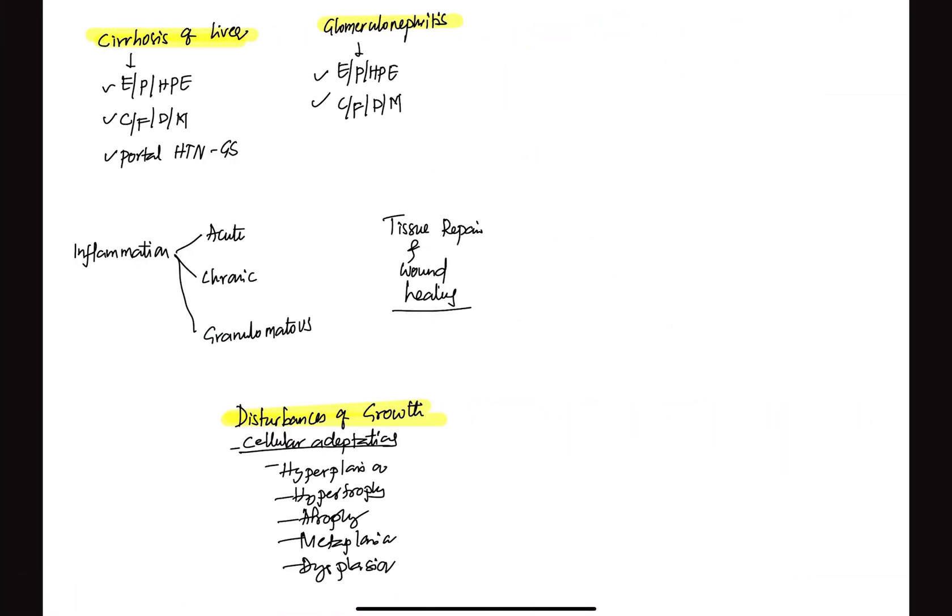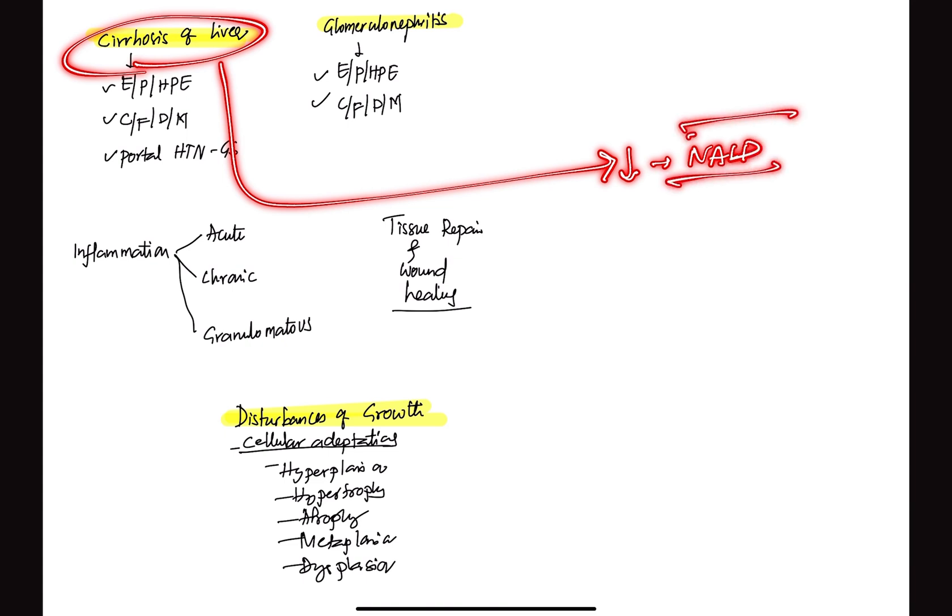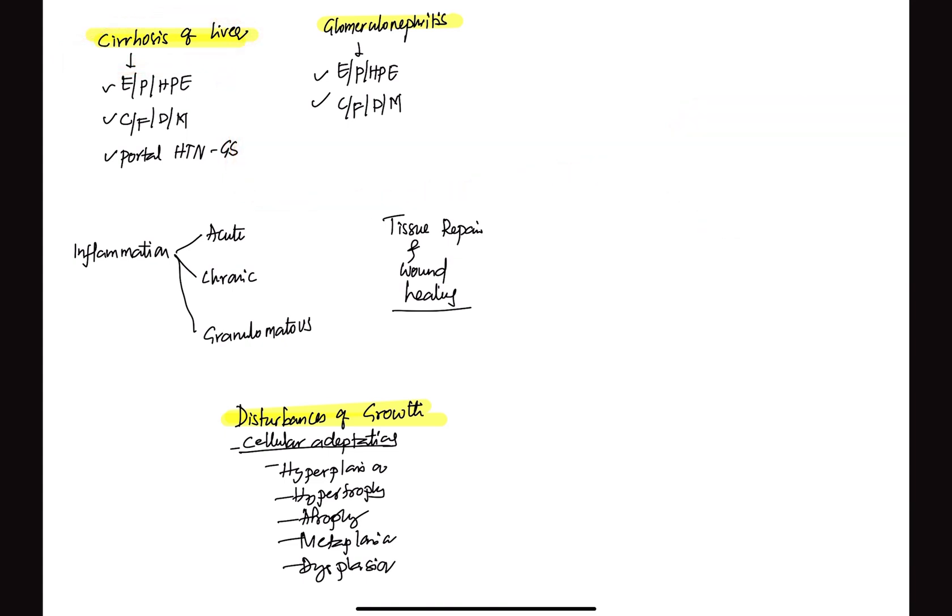Let's also conclude this discussion by looking at some of the other important topics. There is one topic which is there in the syllabus: cirrhosis of liver. This topic is also integrated because in pathology, they are asking etiology, pathogenesis and histopathology. In general medicine, they are asking clinical features, diagnosis and management. In general surgery, there was one topic, portal hypertension which is complication of cirrhosis liver. Recently they did ask a question on non-alcoholic liver disease also.